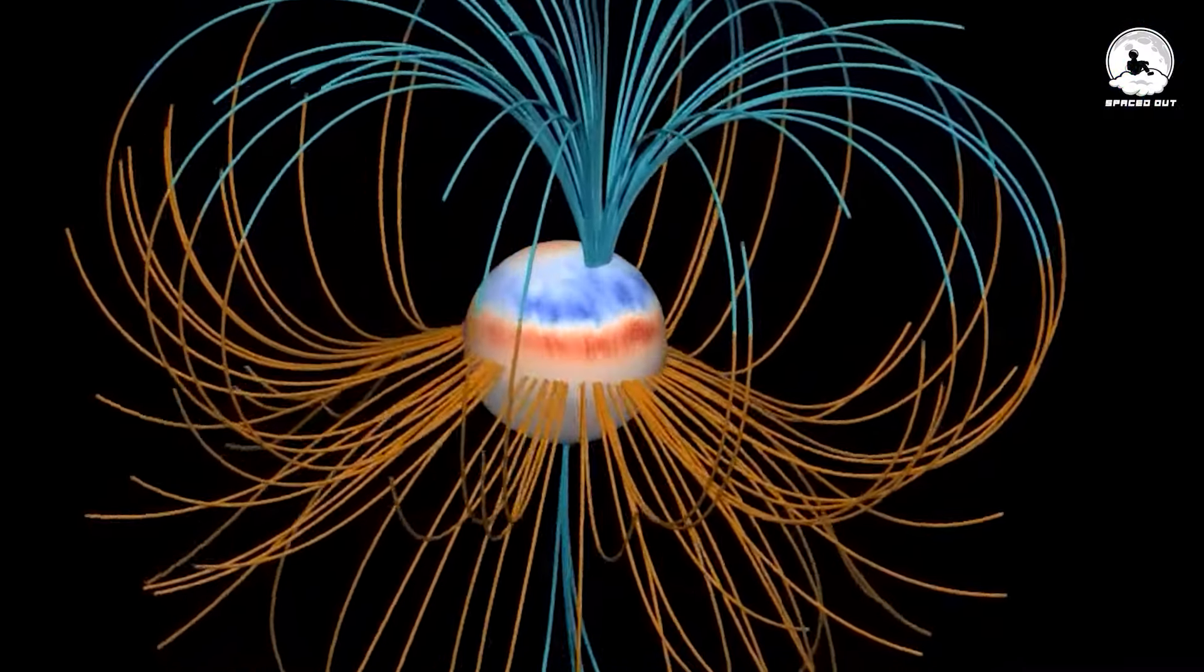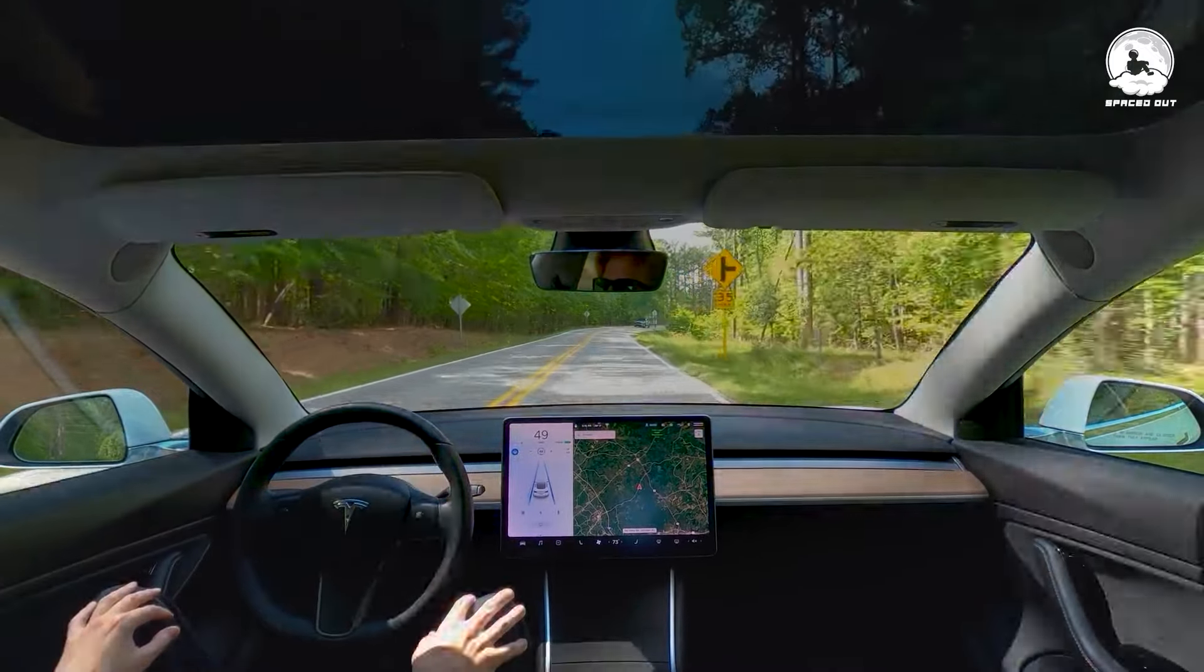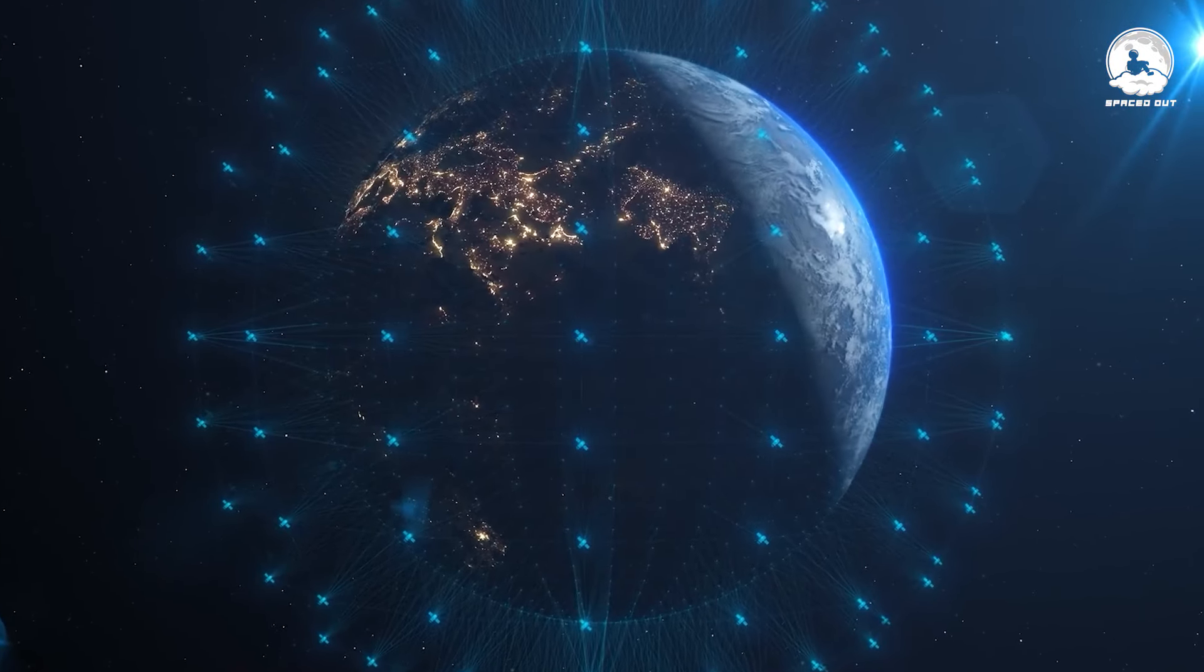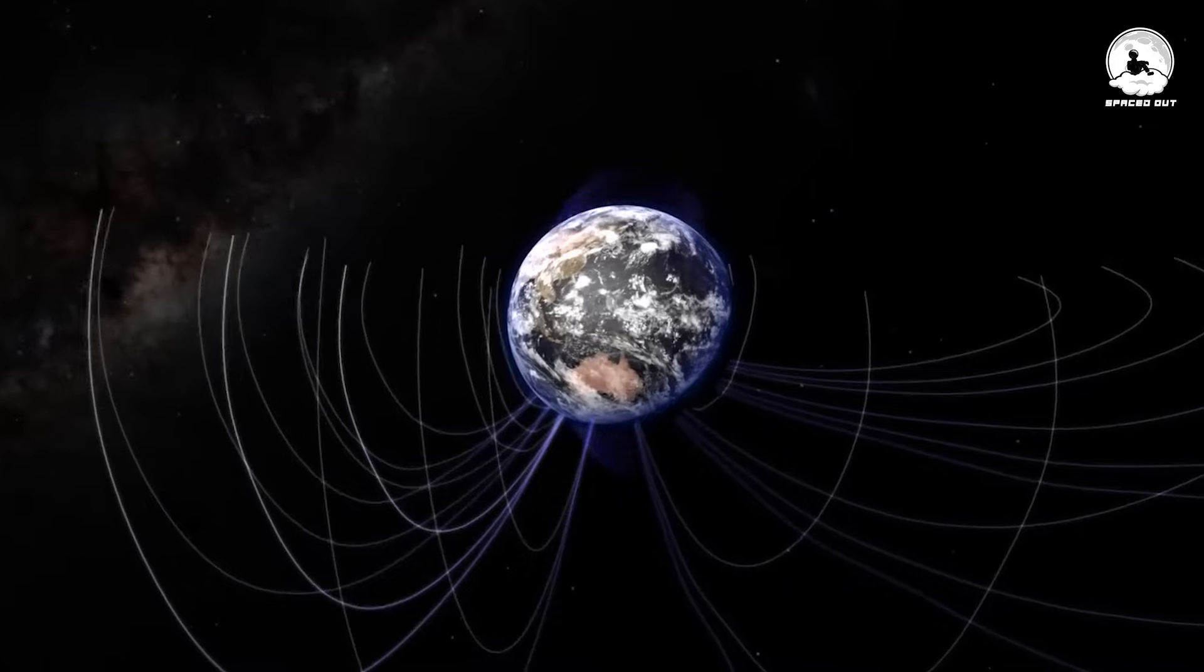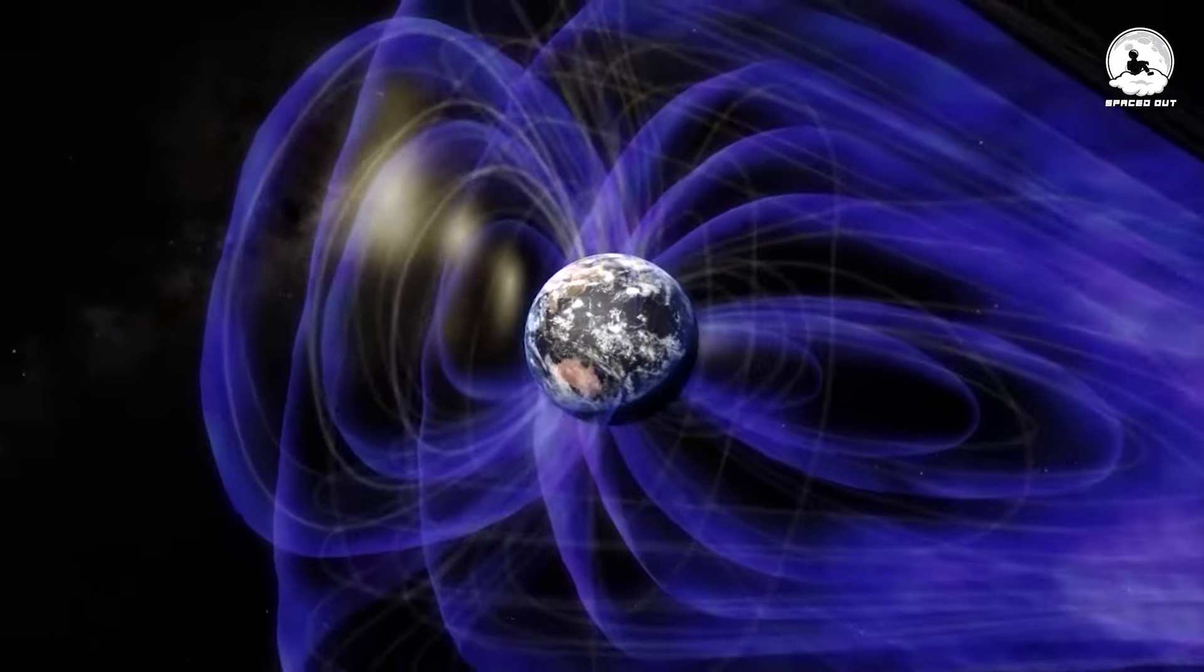A geomagnetic reversal would also require a re-evaluation of navigation technology and practices. Satellites and mariners traditionally rely on Earth's magnetic field for navigation, but with a shifting or reversing magnetic pole, traditional methods may become unreliable.